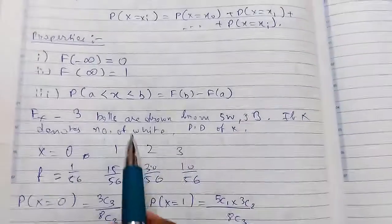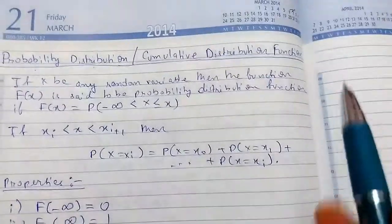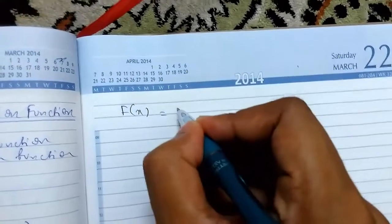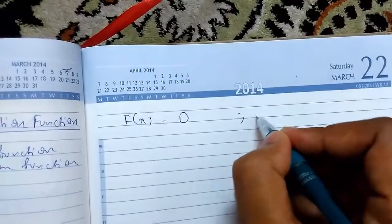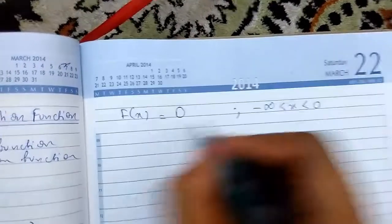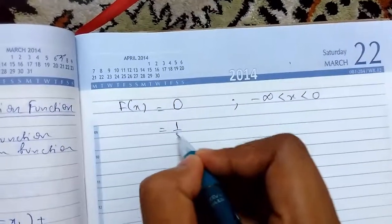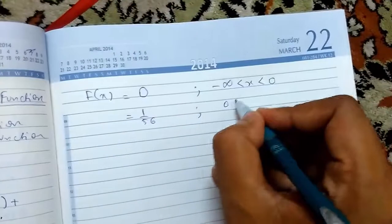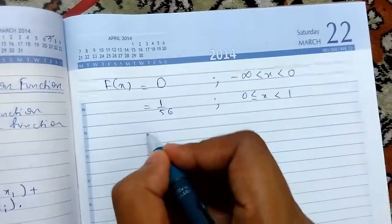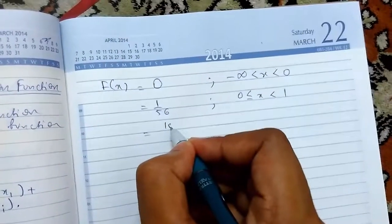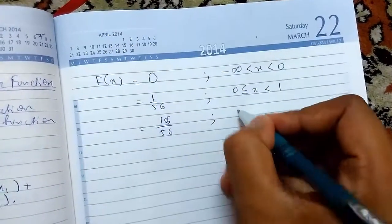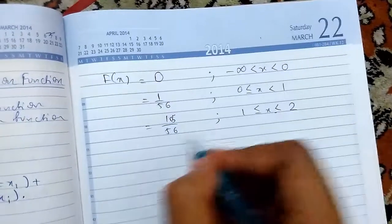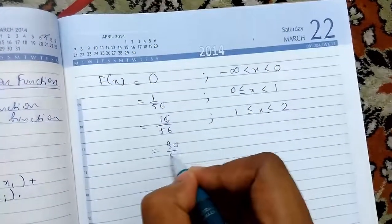So now we need to find the probability distribution or cumulative distribution function. So probability distribution function is F of X. That equals 0 from minus infinity to 0, it is 1 by 56. From 0 to 1, it is 15 by 56. For this range, this is 30 by 56.